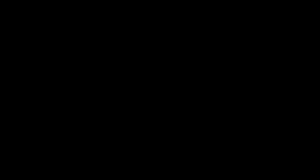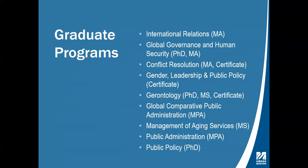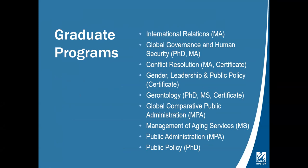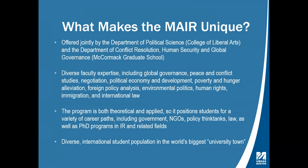What makes the MAIR program unique? One of the best selling points is that it's offered jointly by two departments at UMass Boston: the Department of Political Science in the College of Liberal Arts, and the Department of Conflict Resolution, Human Security and Global Governance in the McCormick Graduate School. Being jointly hosted by two departments means you get twice the faculty and twice the faculty expertise. The conflict resolution department has experts on global governance, peace and conflict studies, and negotiation; the political science department has experts on political economy, poverty and hunger alleviation, and foreign policy analysis.